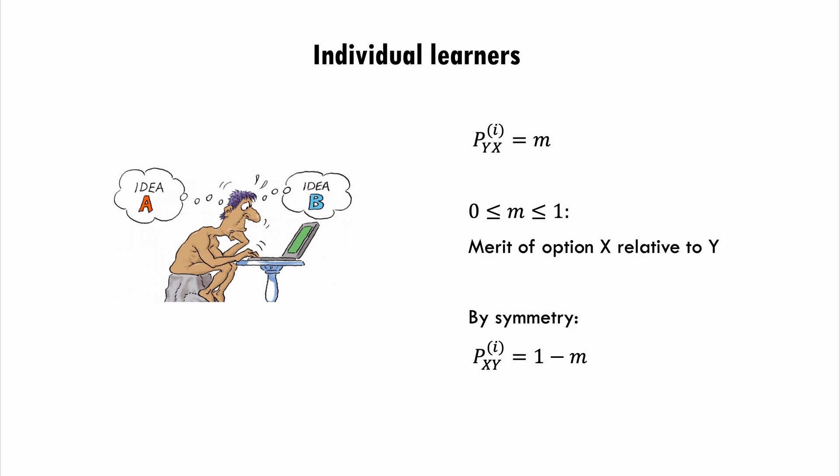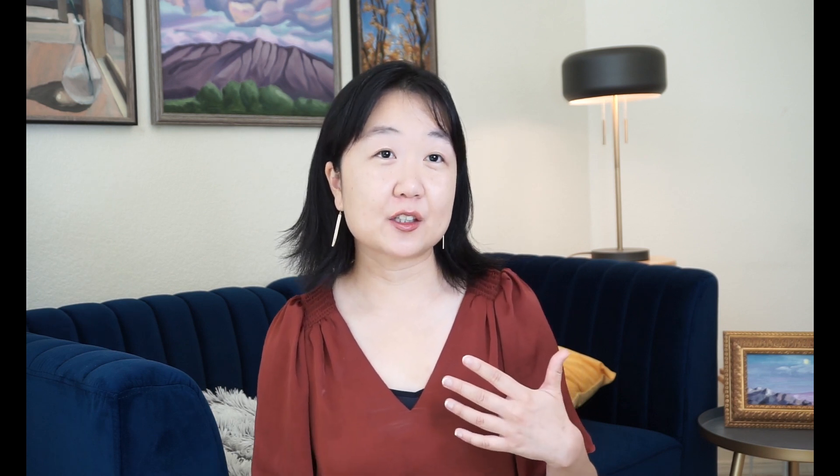Merit reflects how likely an individual is to favor one option over another when considering all available information. Merit is a number between 0 and 1, where 0.5 means the two options have equal merit. By symmetry, the transition rate from x to y is 1 minus m. For social learners, their transition rates depend on conformity. We define the function f(x) to be the likelihood of adopting a behavior or belief as a function of the observed frequency of that behavior or belief in the population. Empirical research found that there are two types of conformity.